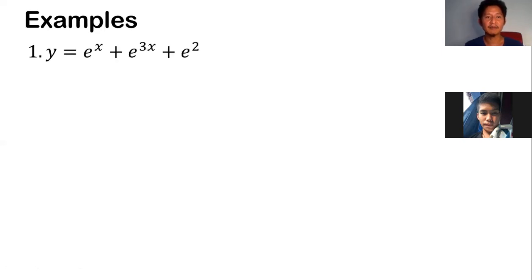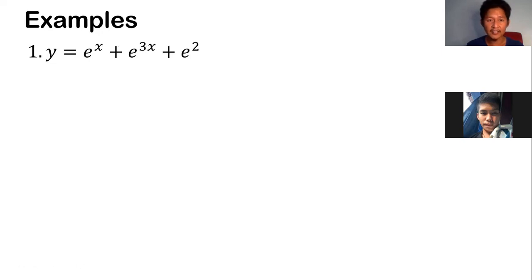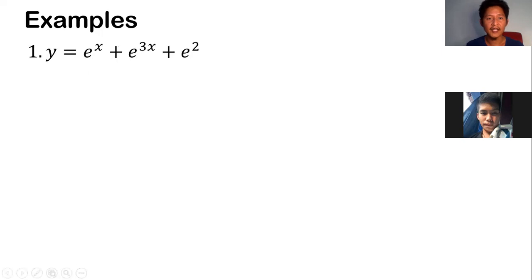Using rule number 7, we just simply copy e to the x. For the second term, notice that the exponent is not just x. So after copying the whole thing, we just get the derivative of the exponent 3x. We know how to get the derivative of 3x.